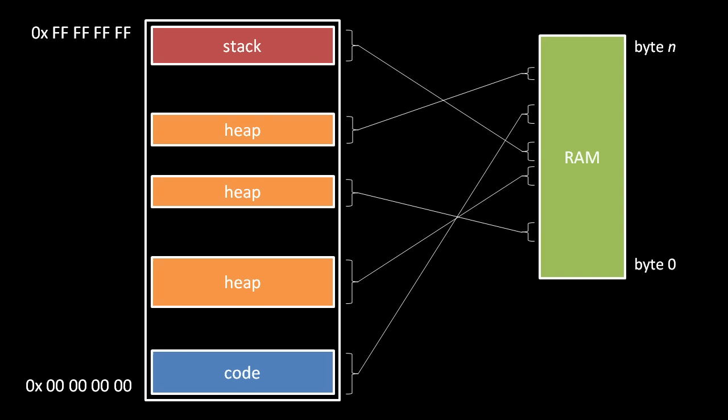The memory addresses of a process do not actually refer directly to actual bytes of system memory. Instead, chunks of the process address space are mapped by the operating system to chunks of system memory, but not necessarily contiguously or in the same order.